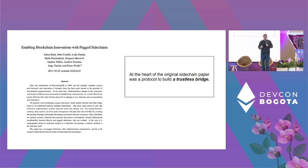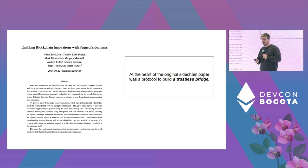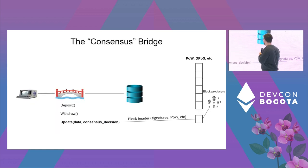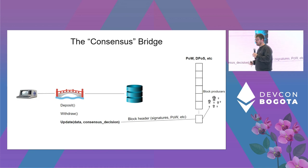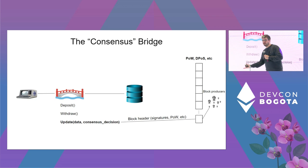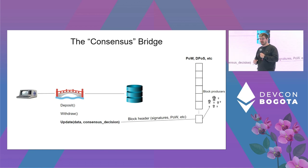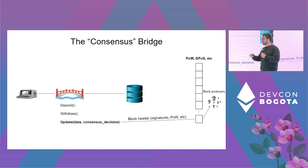This was the original goal of the sidechain paper in 2014. They call it a two-way peg — you take your Bitcoin, lock it into a bridge, and it appears on an experimental blockchain. You transact, then bring your funds back. The idea was a smart contract on Ethereum that would check the consensus protocol of the other system and verify that the funds should be withdrawn.